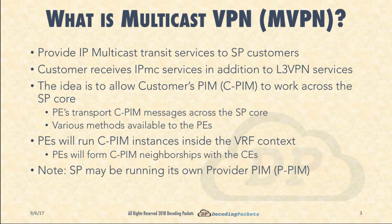So what is a multicast VPN? The basic idea is to provide IP multicast transit services to SP customers, in addition to the Layer 3 VPN services they are already receiving. With Layer 3 VPN services you're providing a unicast transit path; with mVPN, you also provide a multicast transit path across the same SP core.